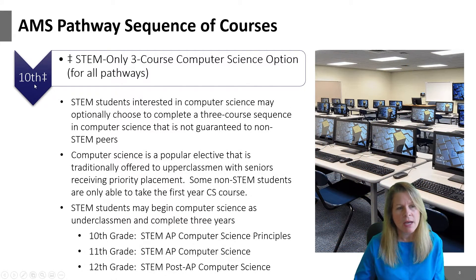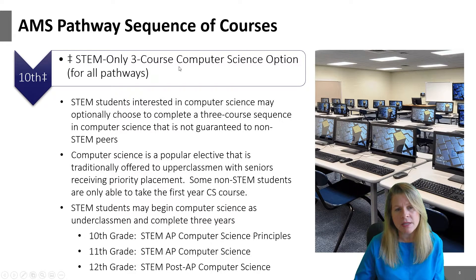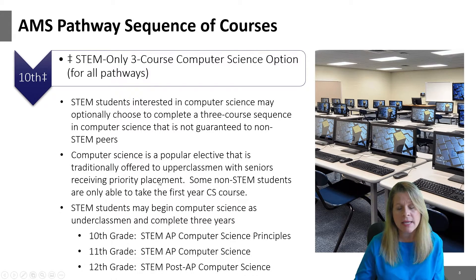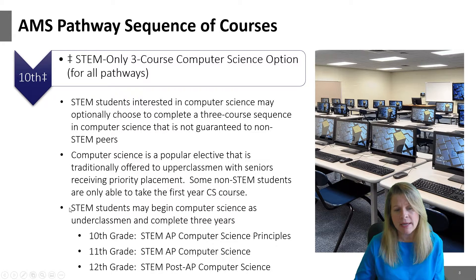I want to talk about a special option available to all STEM students regardless of the pathway you choose: you have the option to take three courses in computer science if you are involved in the STEM Academy and have an interest and passion for it. Computer science is a popular elective at Walton, and traditionally we've had to limit it to upperclassmen — seniors get first priority. That means some non-STEM students don't get a chance to take all the computer science they're interested in. If you choose the STEM Academy, you can start computer science as early as the tenth grade and fit in three classes.